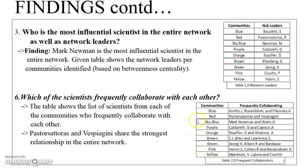I identified the most influential scientists in the entire network as well as the most influential scientist from each community detected in Gephi. When the entire network was considered, scientist Mark Newman is the most influential. Table 1.0 lists the network leaders — the most influential scientists from each community. For example, scientist S. Pokaleti is the most influential from the blue community, and scientist R. Pastor-Torres is the most influential from the red community.